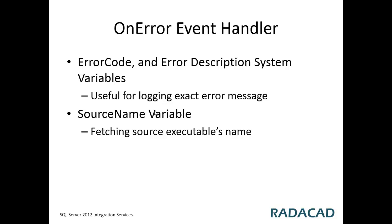Inside each event handler you can create tasks — it looks like a control flow design environment. So you can add as many tasks as you want and define precedence constraints between them. There are some variables which are quite helpful, especially in an error event handler. For example, error code and error description are system variables that exist in an error event handler. There is also a source name variable, which will fetch the task, container, or package that was the source of that event — for instance, a data flow task that was the source of failure.